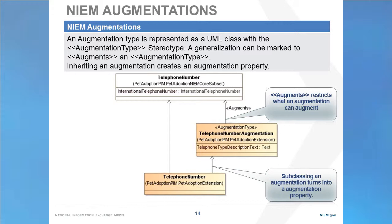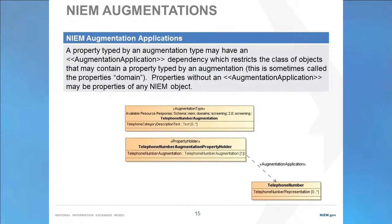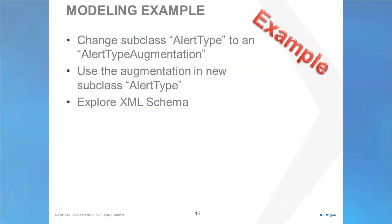Optionally, an augmentation type may define the class that it augments. In this case, telephone number augmentation is restricted to only augment telephone numbers. Another way to restrict what an augmentation augments is at the property level — a property may have an augmentation application to a specific class. In this case, we see telephone number augmentation is restricted to only augmenting telephone numbers. However, other properties using telephone number augmentation could augment other classes.